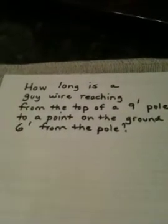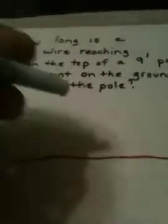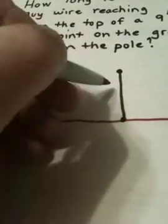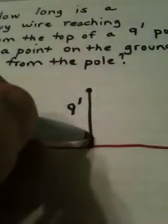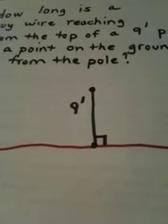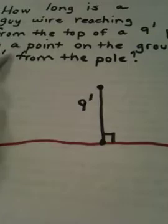A drawing here is crucial, so here's what we got. Sorry for the shakiness, but let's call this the ground. Now I have a pole that is nine feet high. This pole is given to be nine feet in height, and I'm assuming it meets the ground at a right angle, which would be ideal for a pole.